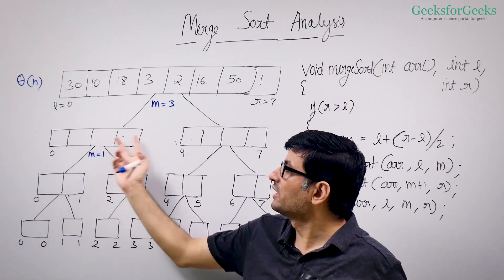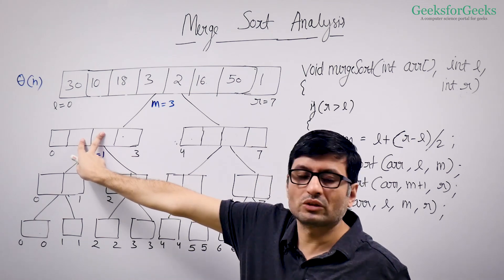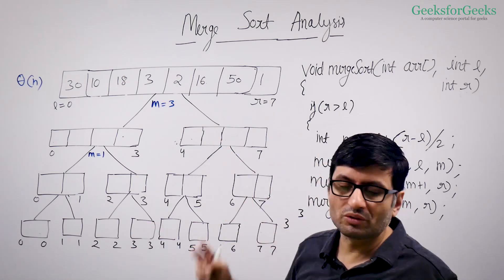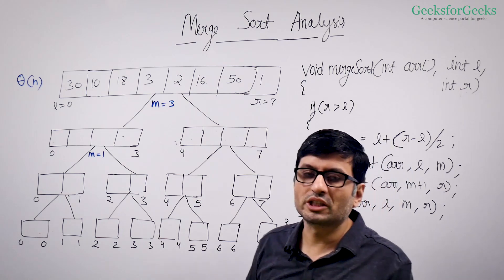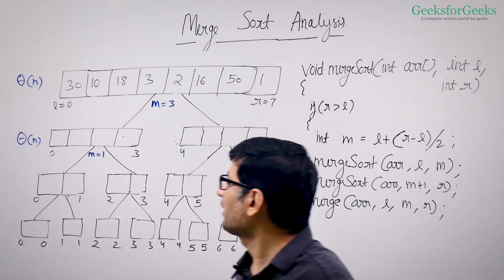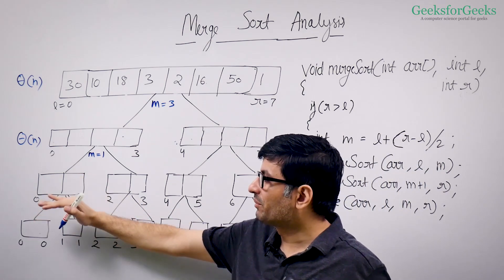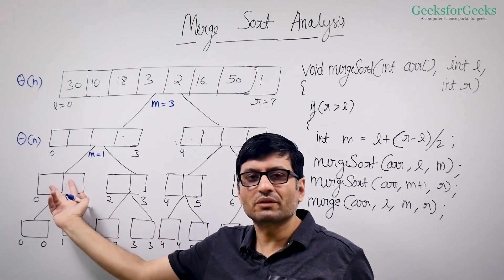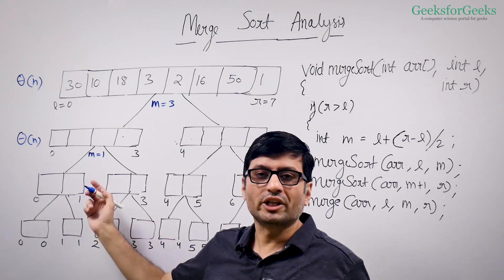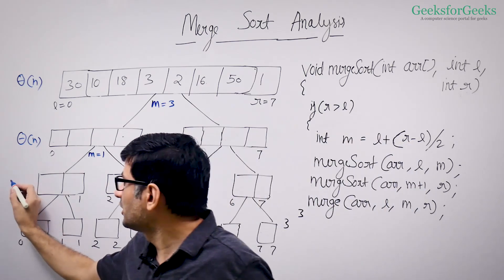At the next level, each call is of size N/2, so it does theta(N/2) work. There are two such calls at that level, so theta(N/2) plus theta(N/2) equals theta(N) — this level also does theta(N) work. At the level below that, each call merges arrays of size N/8 to form an array of size N/4. There are four such merges, each taking theta(N/4), so again the total is theta(N) work.